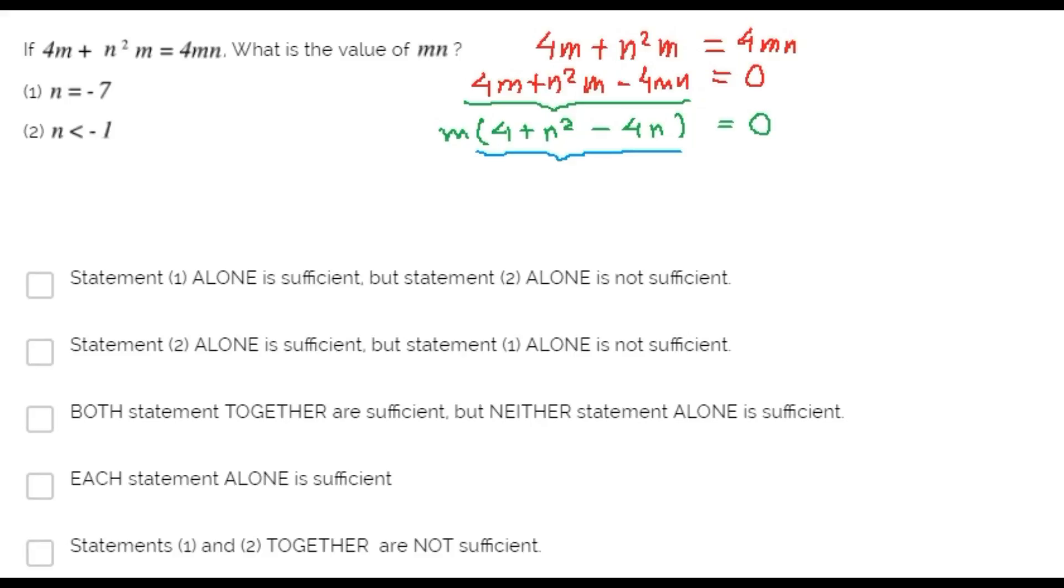This expression can be factored as 2 times n squared. Finally, n times 2 plus n squared is equal to zero is the same as this equation.